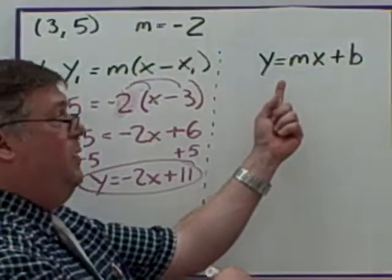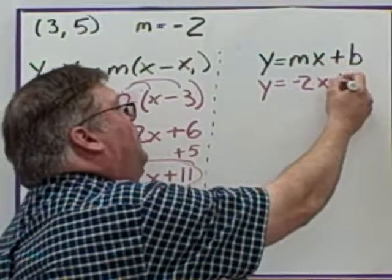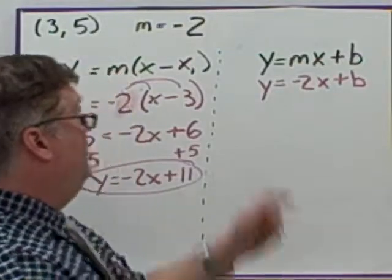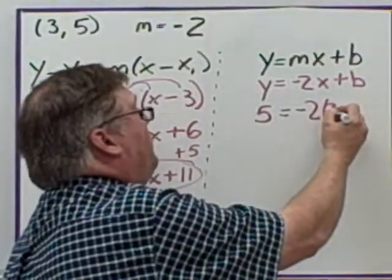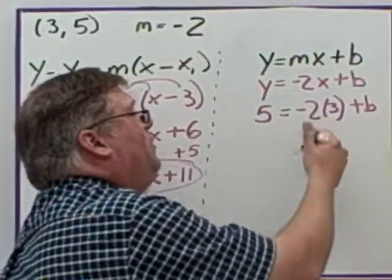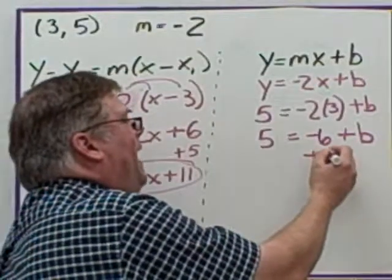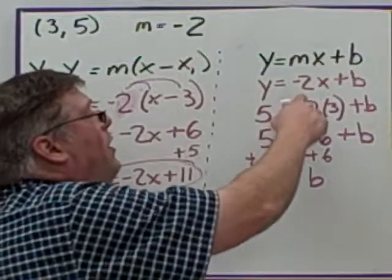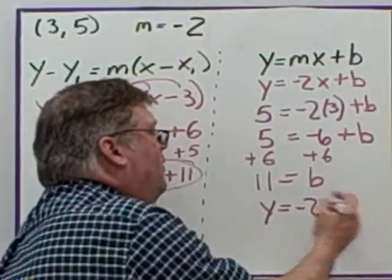Some people find it easier to work directly with the slope-intercept form. To do that, replace the slope but you don't have the intercept yet, so you need to find it. Plug in the given x and y values — 5 for y and 3 for x — and solve for b. Negative 2 times 3 is negative 6, so 5 equals negative 6 plus b. Adding 6 to both sides gives b equals 11. Now with slope and y-intercept known, the equation is y equals negative 2x plus 11.